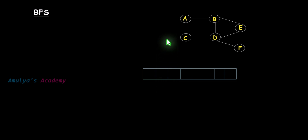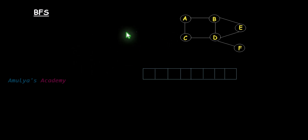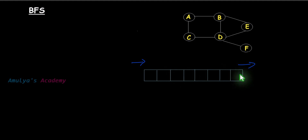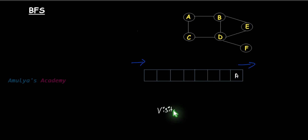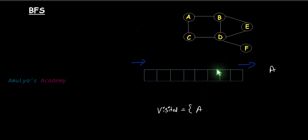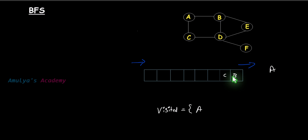The first step is to choose the starting node — you can take any node. We will insert data here and remove data from the other end. Let's take A as the starting node. We insert A into the empty queue, then mark A as visited. Next, remove A from the queue. Now add all unvisited adjacent nodes of A — here B and C are the unvisited adjacent nodes. I'll add B first, then C.